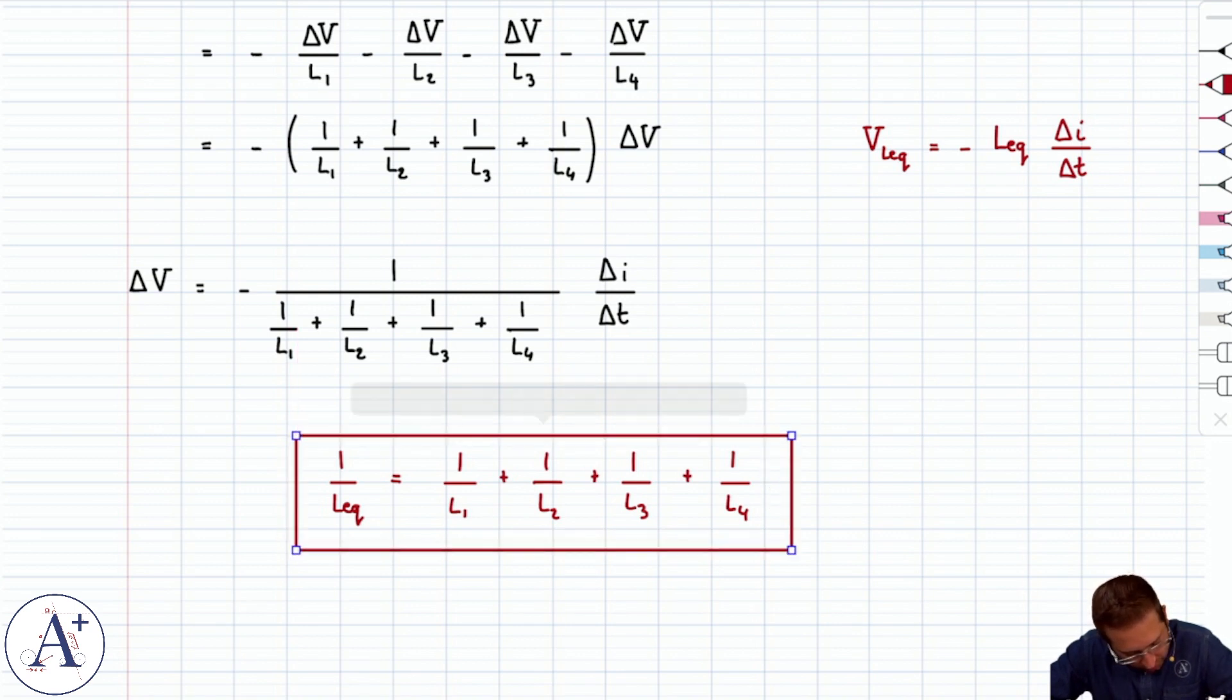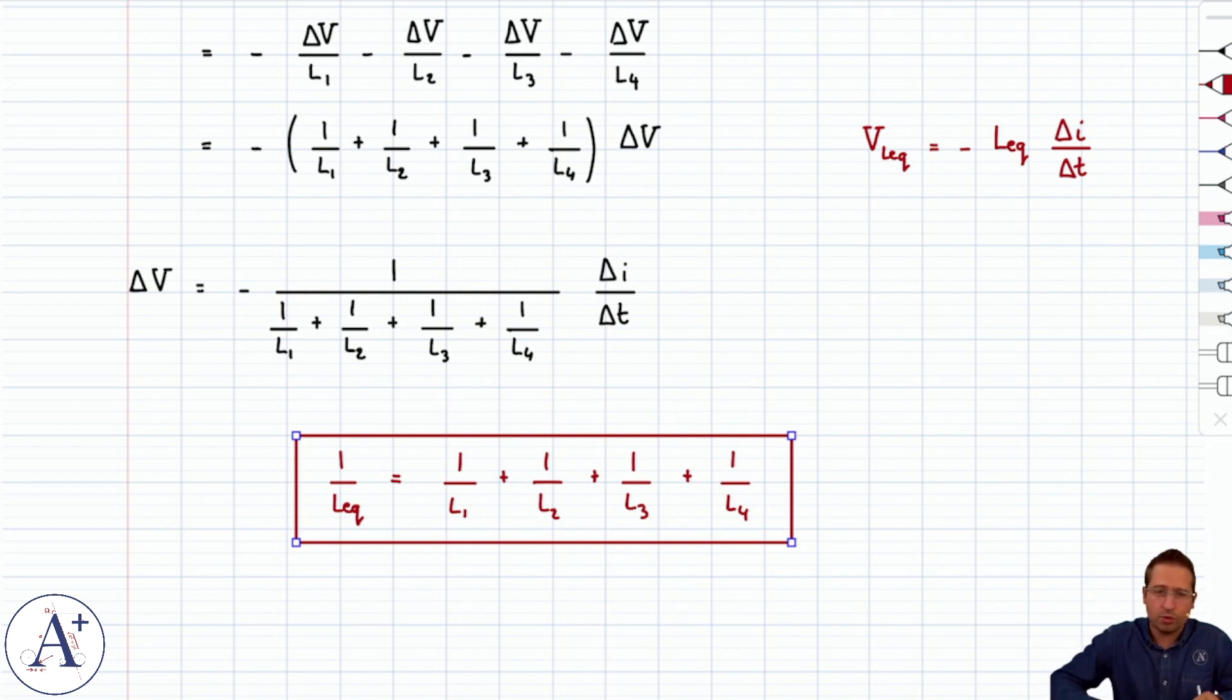So this is how you compute L equivalent. Careful that what you're actually computing here is 1 over L equivalent, so you have to flip whatever you find on the right hand side to get the true expression for L equivalent or the true value if you're plugging in values. But don't forget to flip it.